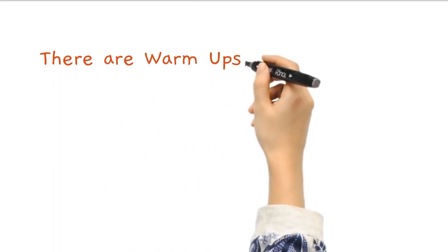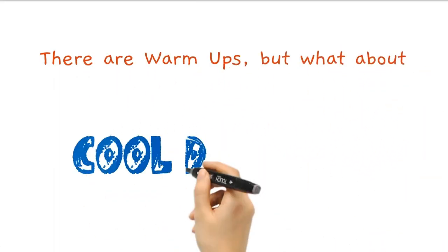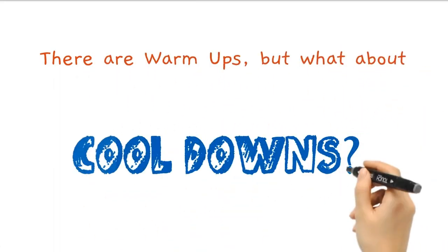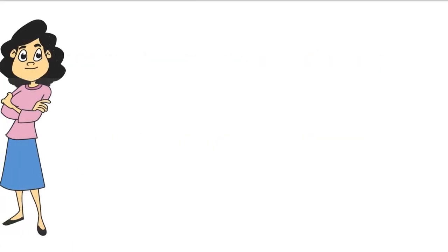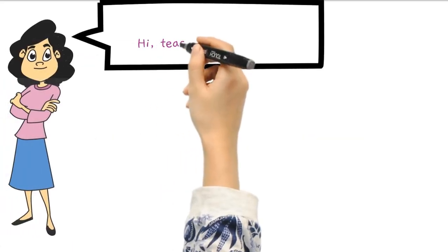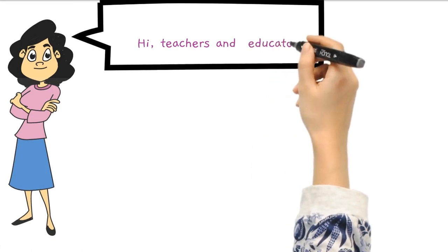We are done with how to start a class on a high note and how to develop the content according to learning objectives. However, there is one more crucial aspect to lesson planning: how to end or close a lesson, or how we can exit a classroom like a pro — also known as cool downs. Every warm-up must end with a cool down.